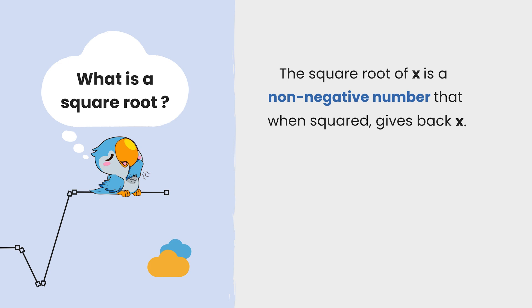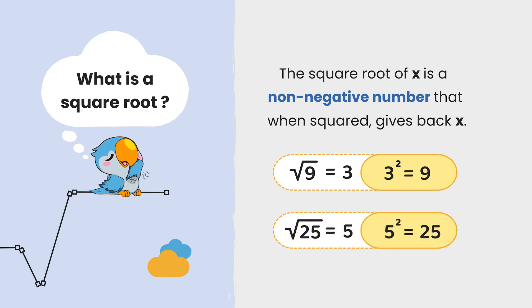This means, for example, the square root of 9 is 3 because 3 squared equals 9. The square root of 25 is 5 because 5 squared equals 25.